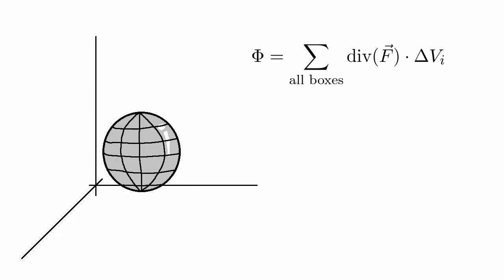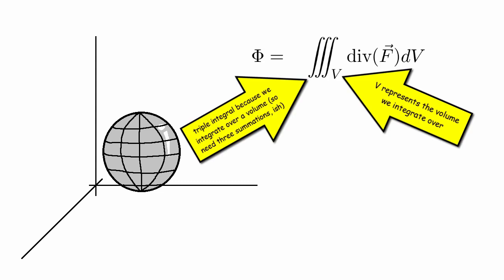And again, if our volume is infinitesimally small, then we can just turn this delta v into a dv and the summation into an integral. And there we have worked out another way to find the flux through a closed volume. It's to just integrate the divergence of that field across the entire volume.